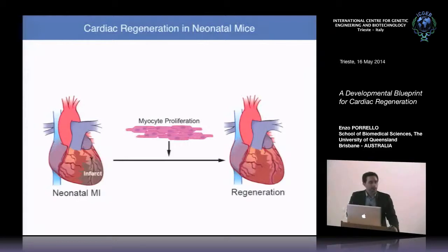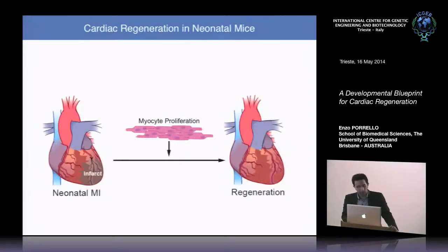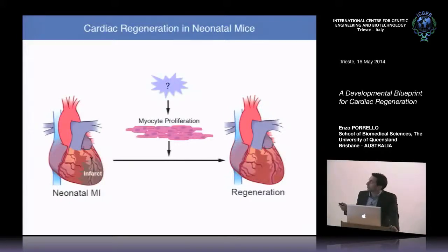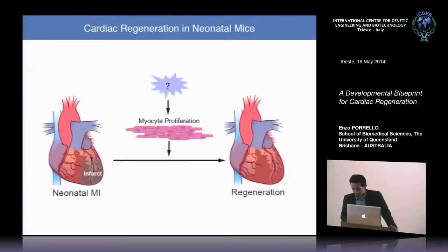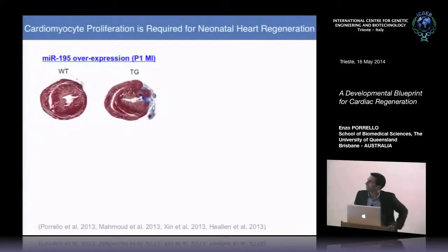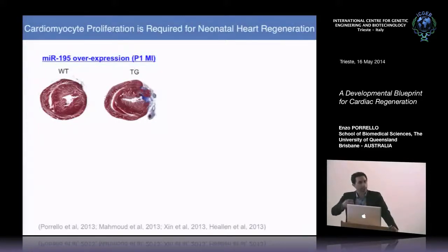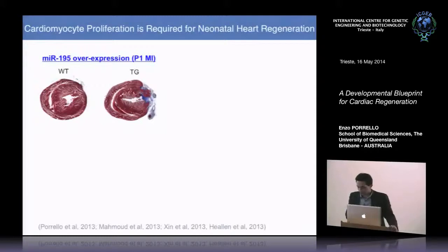The neonatal mouse heart can regenerate following multiple forms of cardiac injury including MI, involving activation of cardiomyocyte proliferation — similar to the adult zebrafish regenerative response. We and others have been very interested in identifying molecular mechanisms regulating cardiomyocyte proliferative capacity that could potentially be targeted for cardiac regeneration in adulthood. We've used mouse genetics to dissect the relative importance of different signaling pathways in regulating myocyte proliferation.